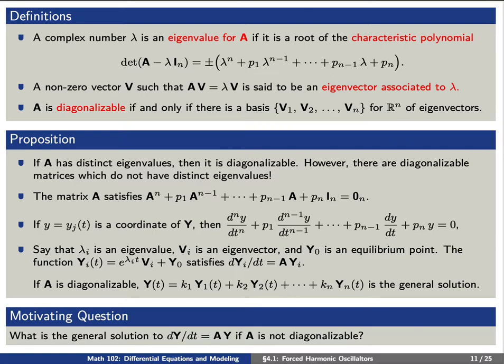We have the following results. If A has distinct eigenvalues, then A is diagonalizable. However, there are diagonalizable matrices which do not have distinct eigenvalues. Each coordinate y sub j is a solution to some nth order differential equation. If lambda is an eigenvalue, V is an eigenvector, and y0 is an equilibrium point, then the function y(t) equals e^(lambda*t)*V plus y0 satisfies the system dy/dt equals A times y. If A is diagonalizable, we can write down the general solution in terms of eigenvectors.